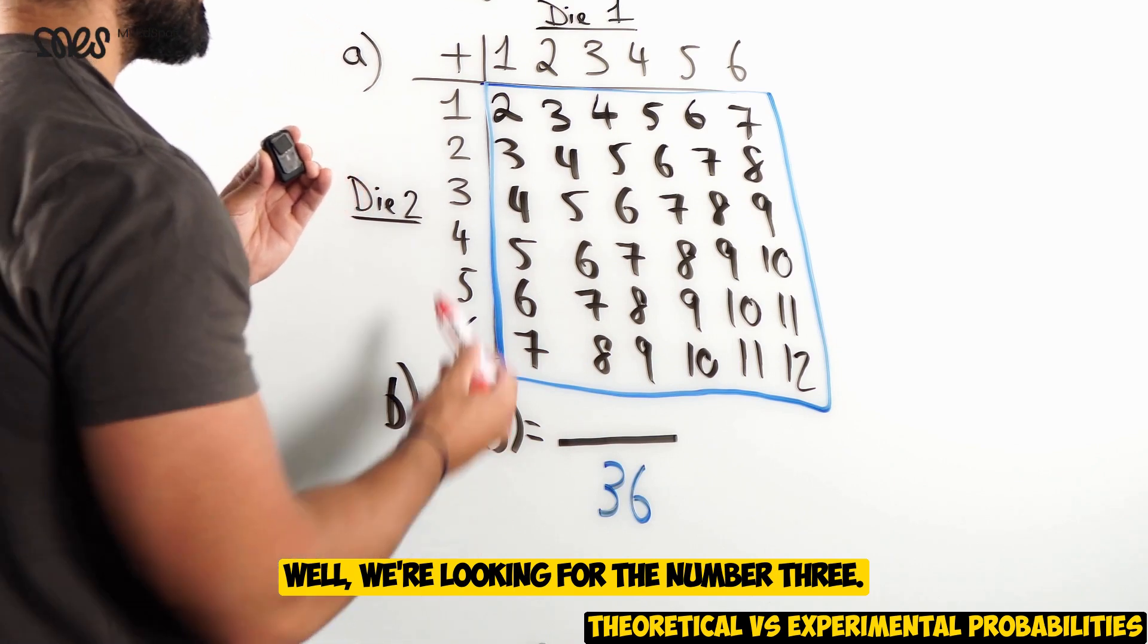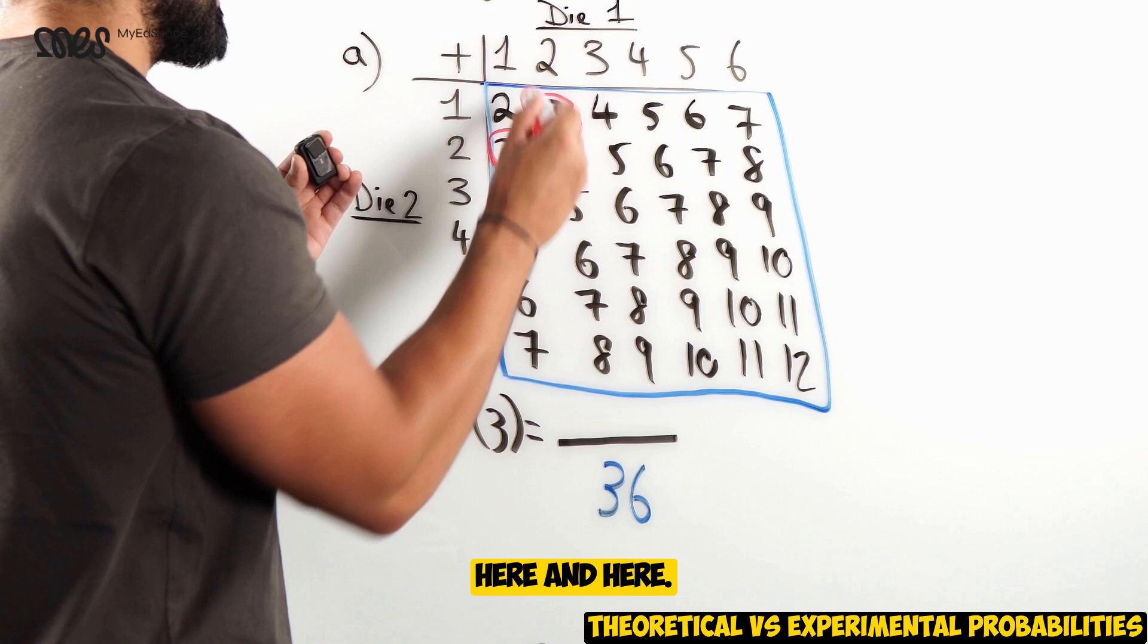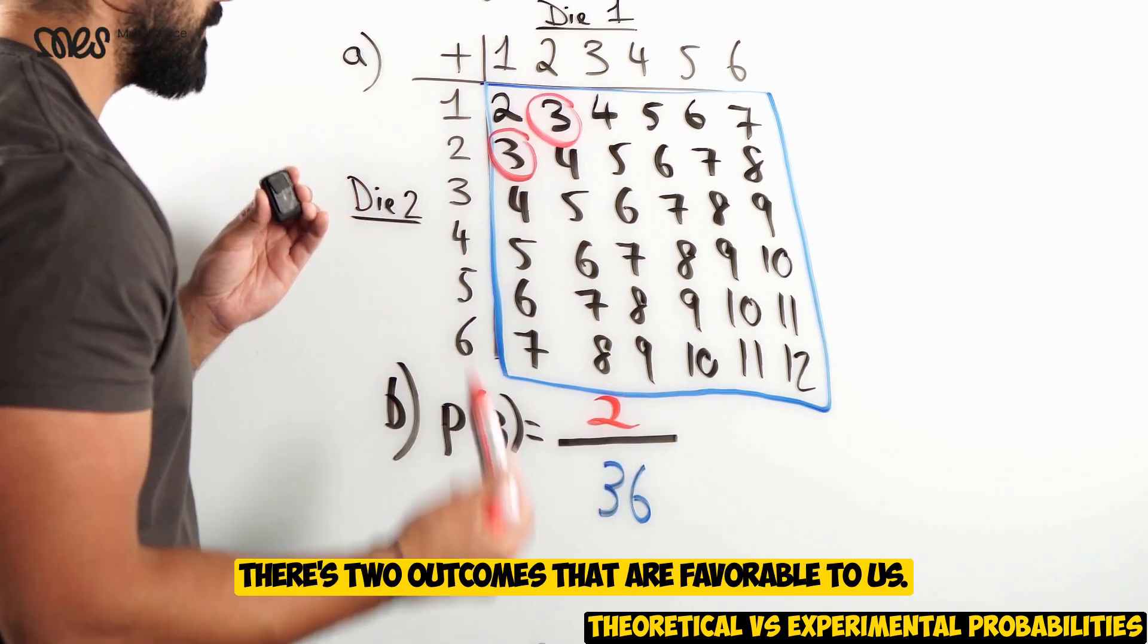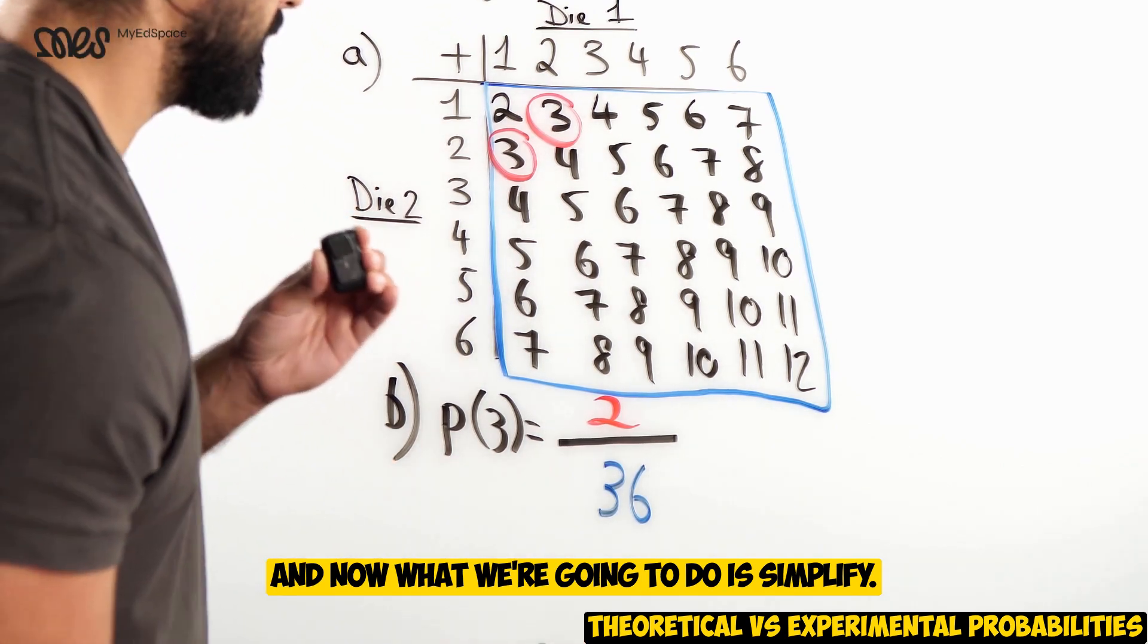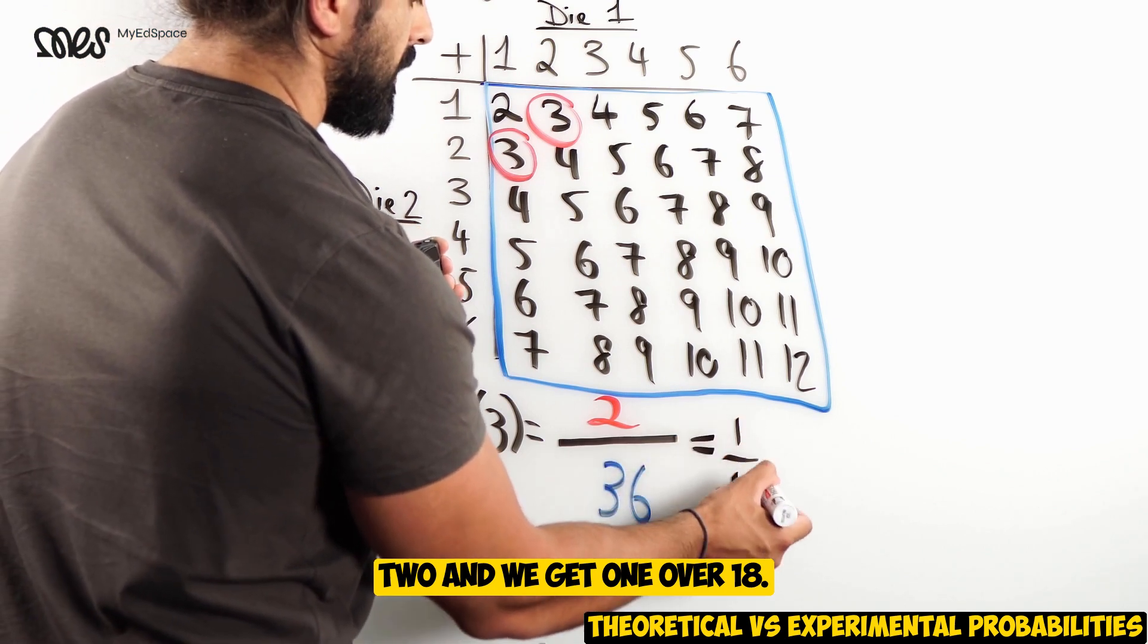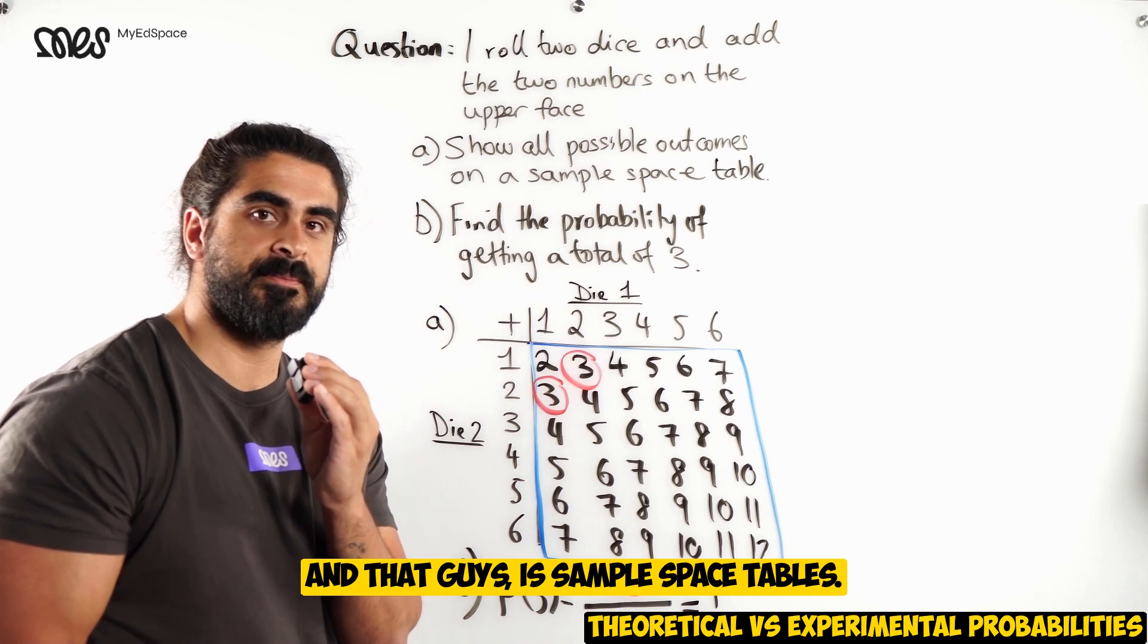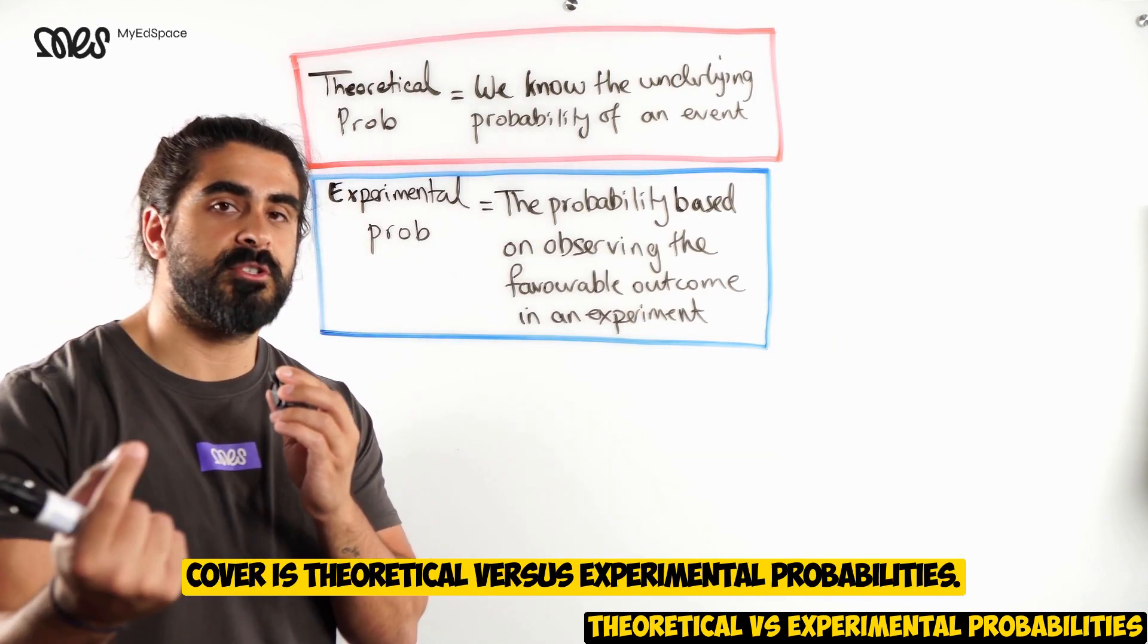Which one of those are favorable to us? Well, we're looking for the number 3. Where do you see the number 3? Here and here. There's two outcomes that are favorable to us. And now, what we're going to do is simplify. We can divide top and bottom by 2. And we get 1 over 18. And that, guys, is sample space tables.